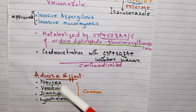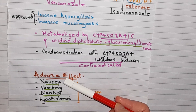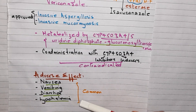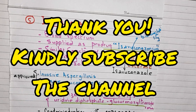The adverse effects of Isavuconazole include nausea, vomiting, diarrhea, and hypokalemia. These are the common adverse effects of Isavuconazole. I hope you liked the video. Thank you so much.